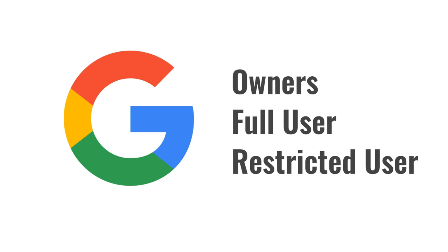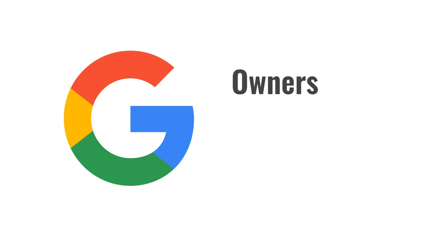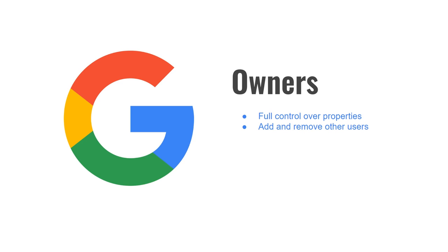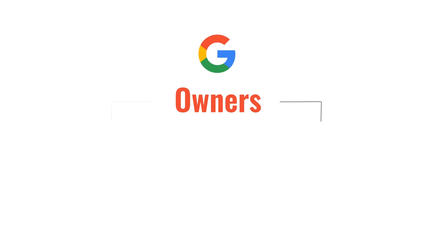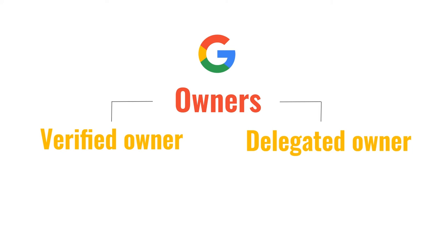Owners have full control over properties in Search Console. They can add and remove other users, configure settings, view all data, and use all tools. There are two types of owners — verified and delegated — although both are reported as simply 'owner' in the settings page. A property must have at least one verified owner, or no users will have access to the property.